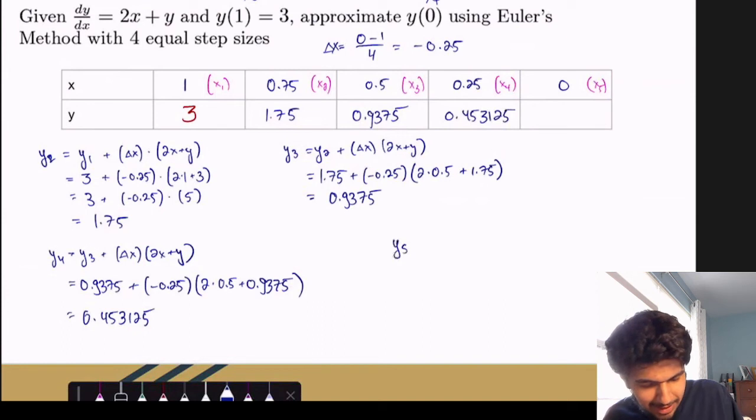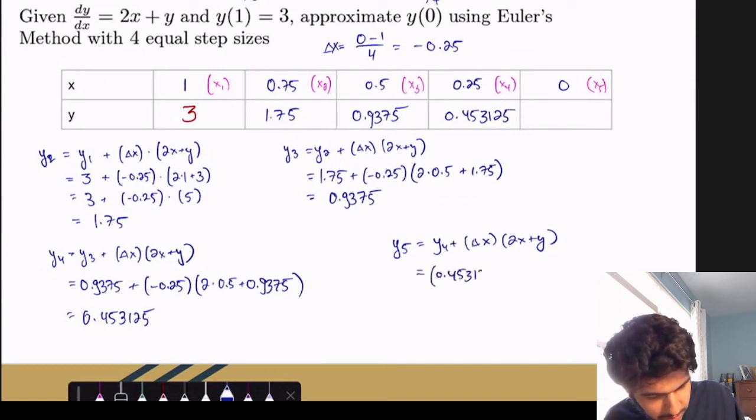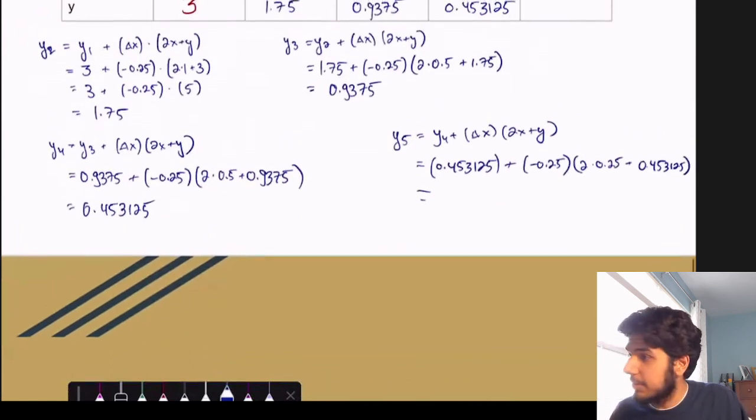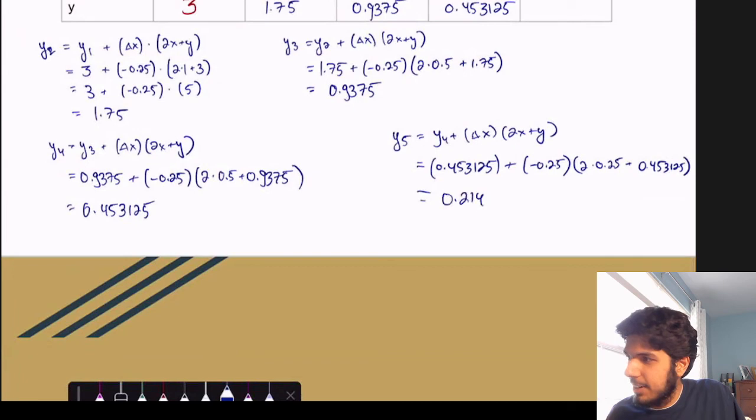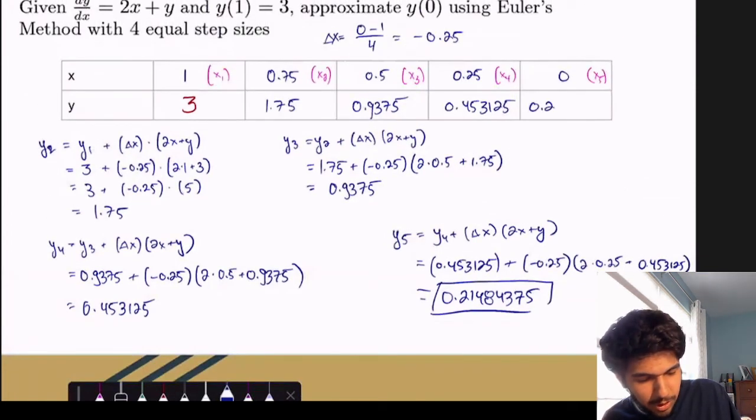And finally, we reach our target. It's the same equation here, just with different values. Sorry, that should not be an equal sign. And this would be equal to 0.453125 plus negative 0.25 times 2 times 0.25 plus 0.453125. And we can compute that out. And that will give us 0.21484375. And that is our approximation at the point x equals 0.